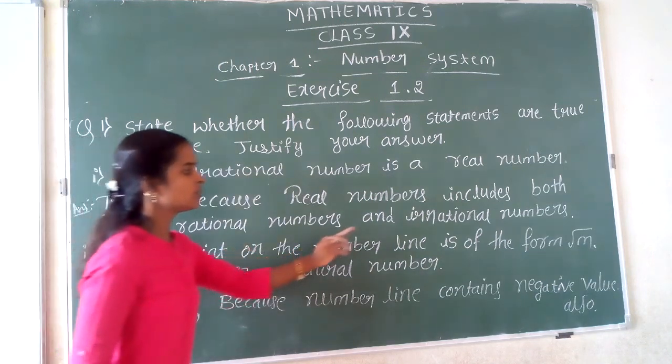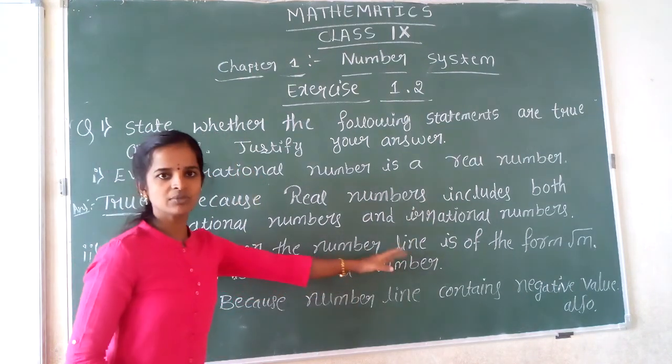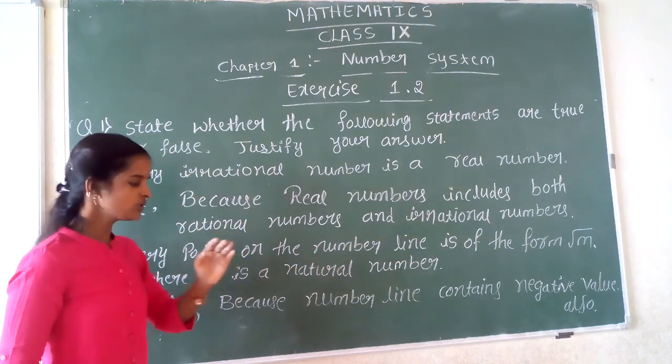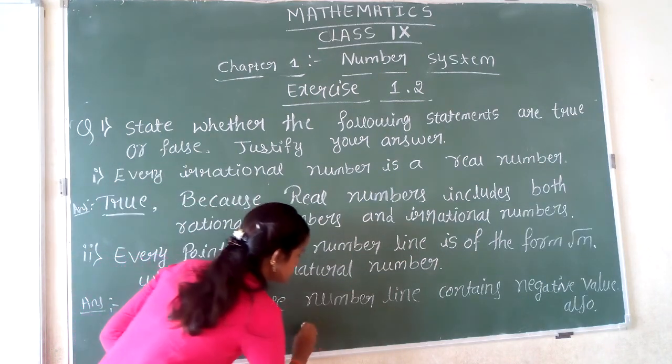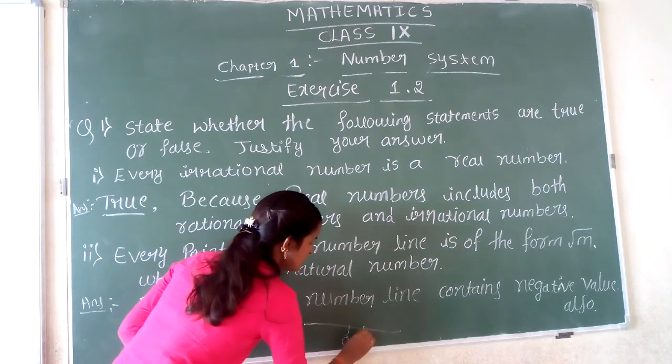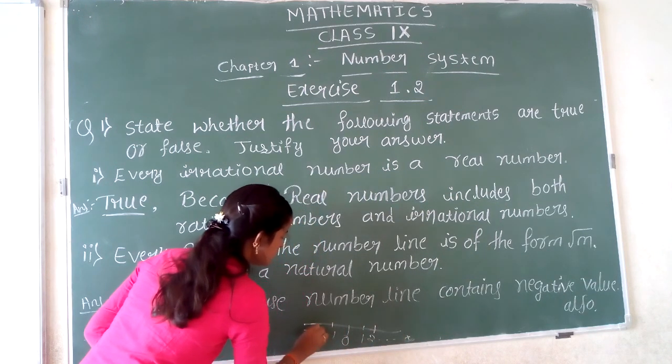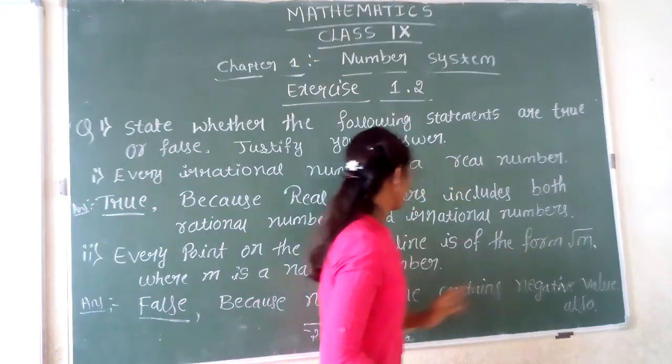Every point of the number line is of the form root M, where M is a natural number. This statement is false because the number line contains both positive and negative values. Suppose you consider the number line: 0, 1, 2 up to infinity, and also minus 1, minus 2. The statement says every point of the number line is of the form root M.